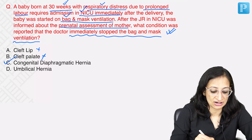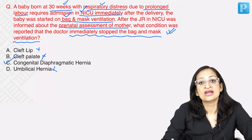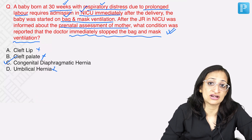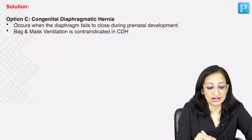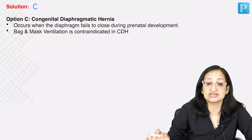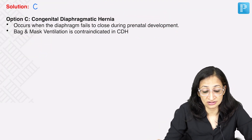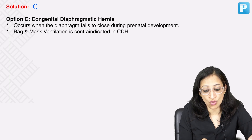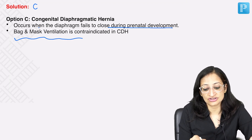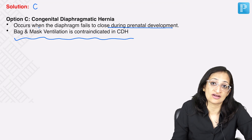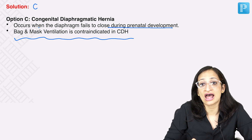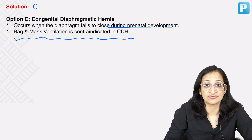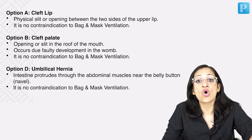Congenital diaphragmatic hernia is the best answer to this question — not cleft lip, not cleft palate, and not umbilical hernia. In the question bank explanation, the correct answer is option C: congenital diaphragmatic hernia. It occurs when the diaphragm fails to close during prenatal development. Bag and mask ventilation is contraindicated in CDH, and it is a condition which can be diagnosed on antenatal ultrasound if the defect is big enough.